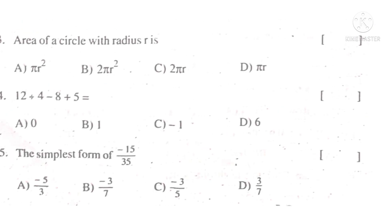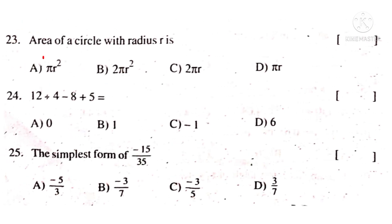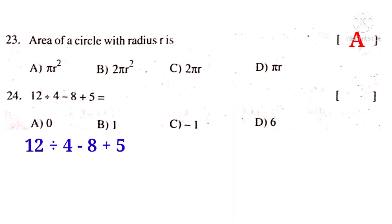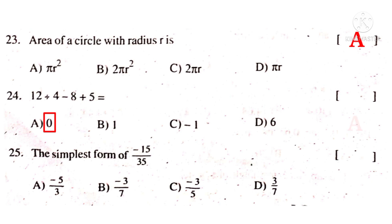Now 23rd bit. Area of a circle with radius R is pi R square. So the correct choice is A. 24. 12 divided by 4 minus 8 plus 5. Write the BODMAS rule. In the BODMAS rule, in the given operations, first division comes. So it is equal to 3 minus 8 plus 5. Next operation is addition here. So 8 minus 8. And next operation is subtraction. That is equal to 0. So 0 is the answer. So the correct choice is B.